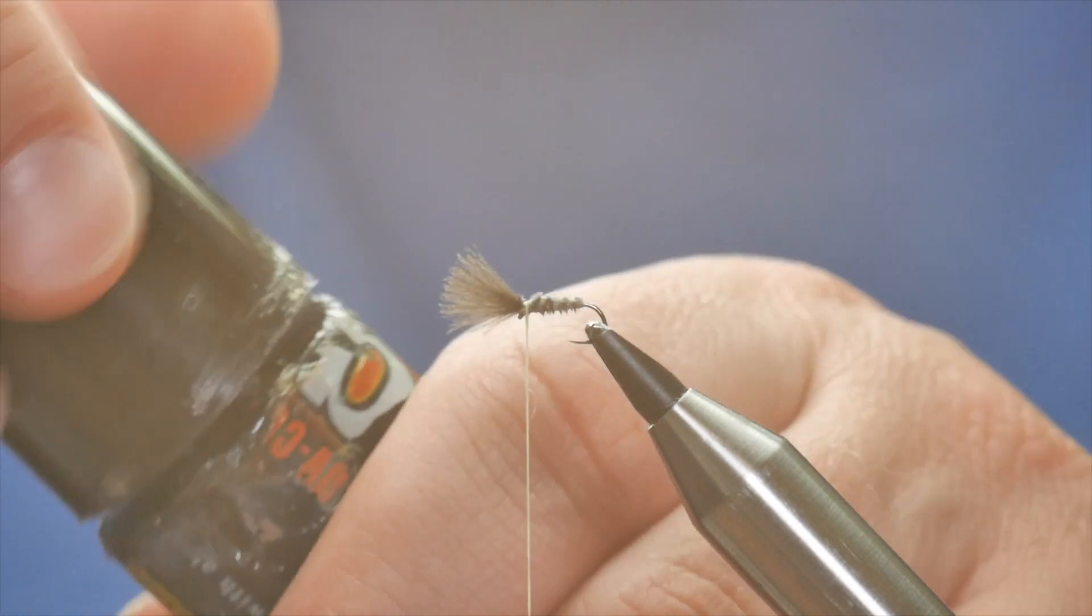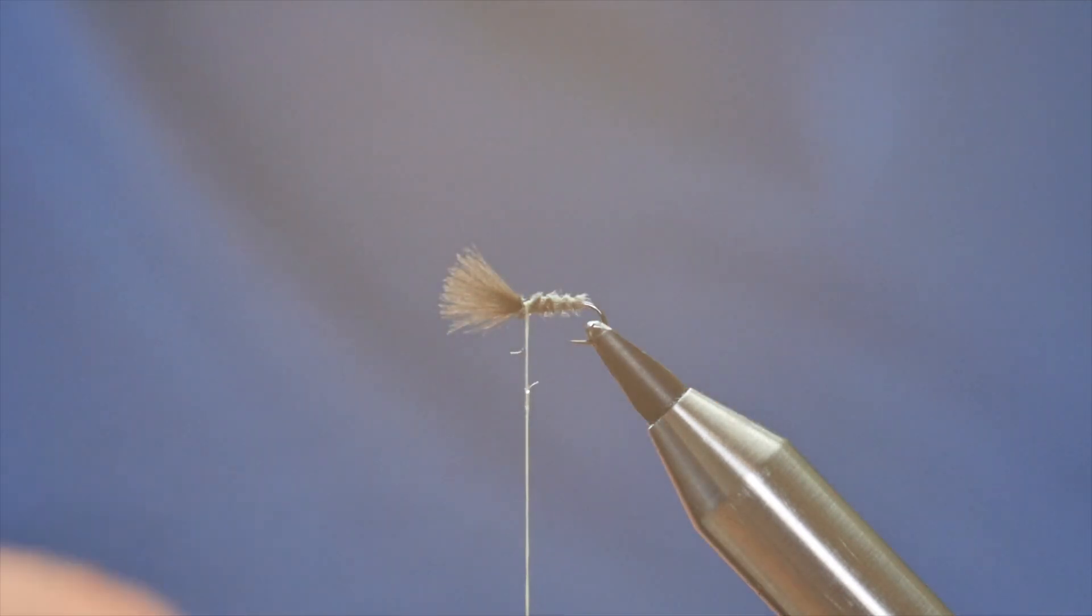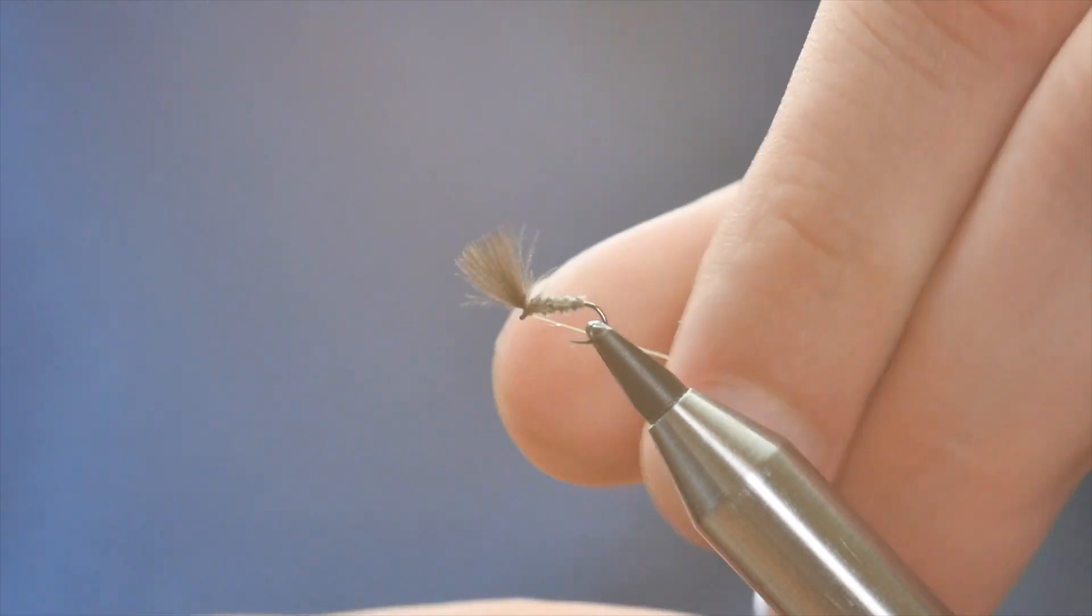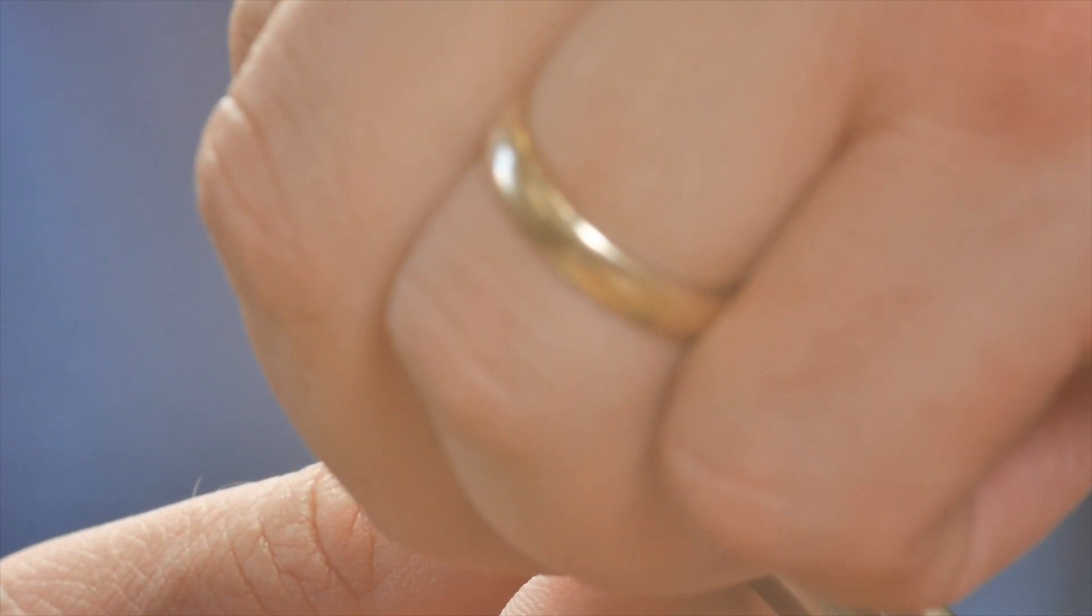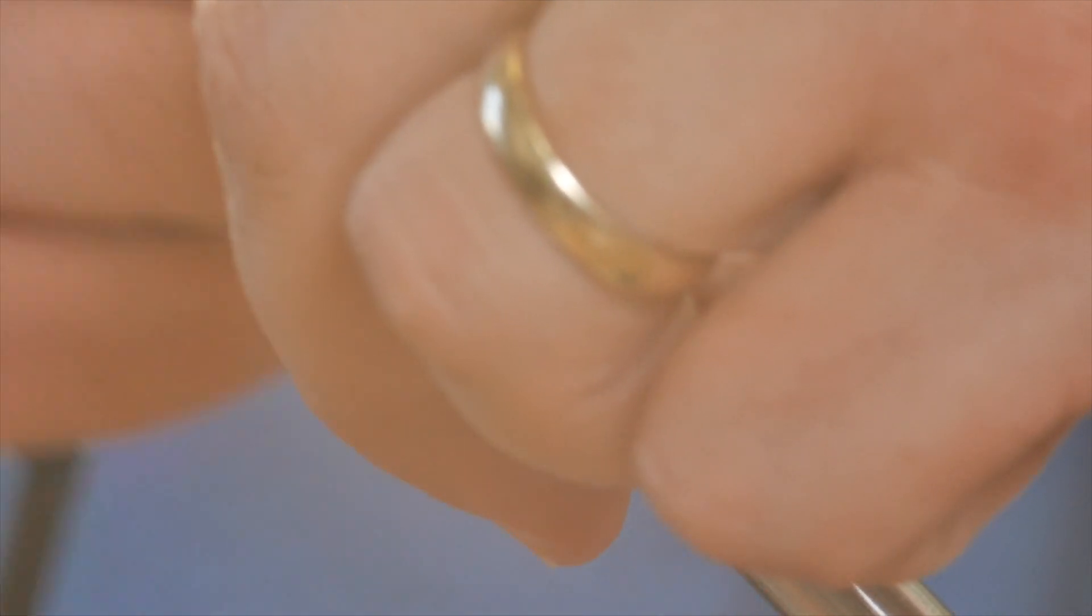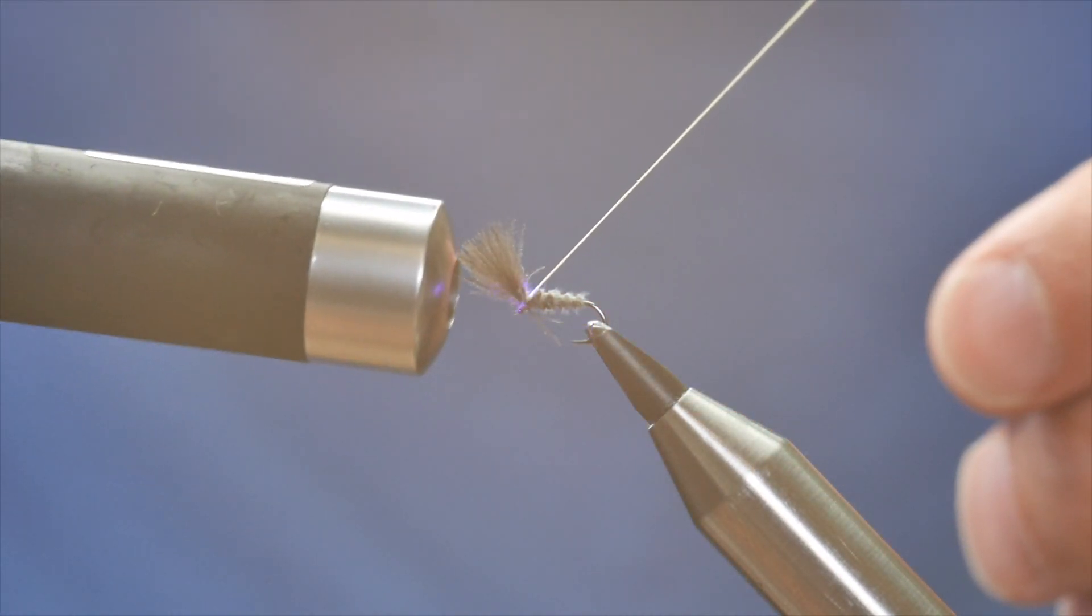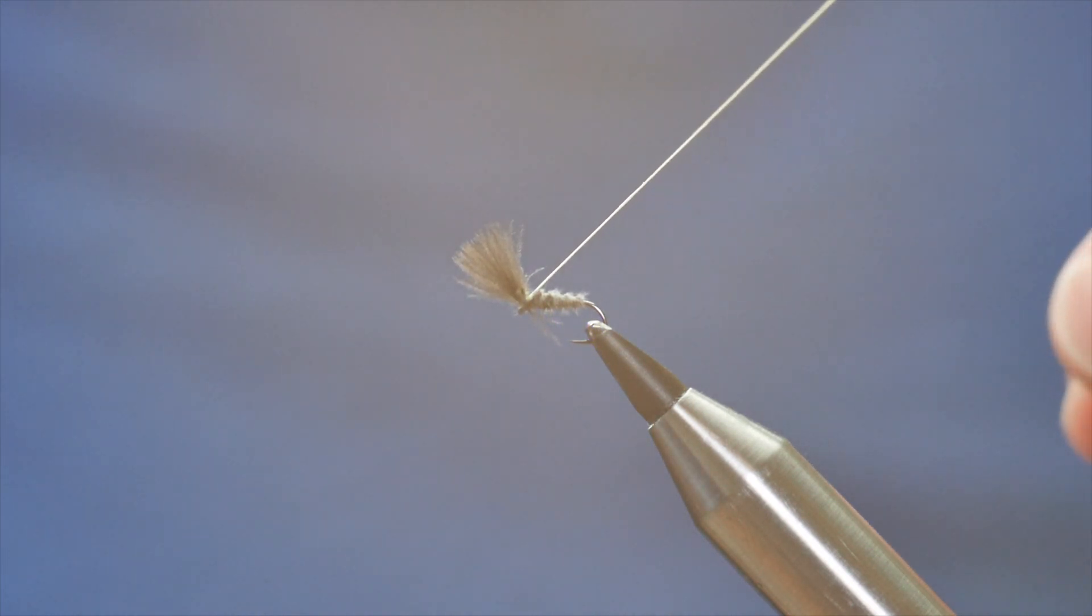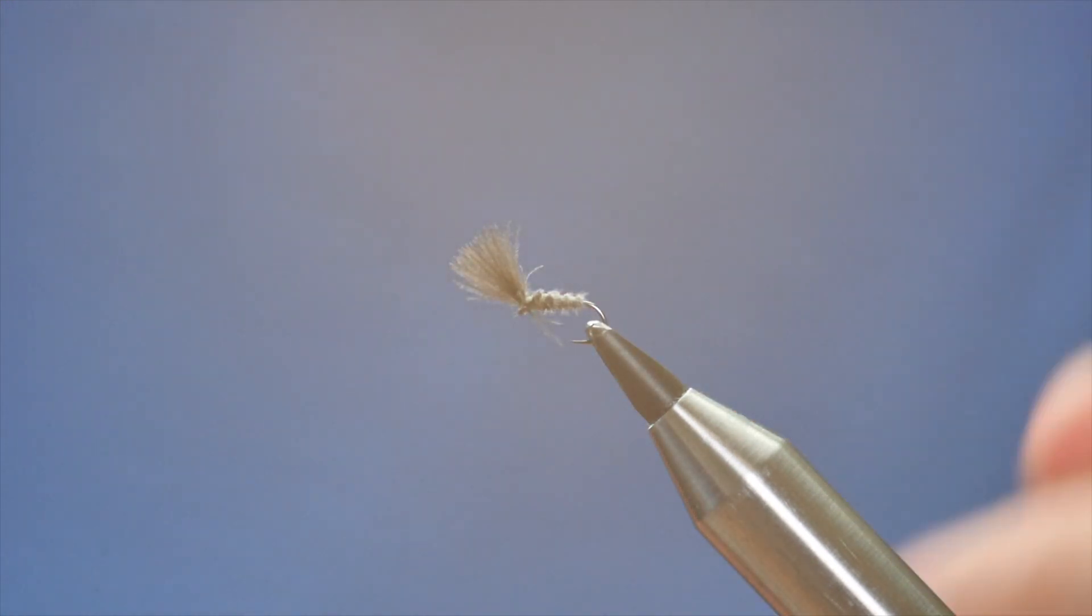Okay, to finish off, I'm going to add the slightest amount of UV to my thread. Sweep it all back. One, two turns. And then a half hitch just to finish that off. And once I've got my half hitch in, I can come in. There's hardly any UV, so it'll only take a second to cure. And trim away my thread.